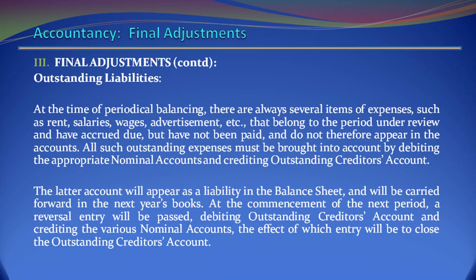Outstanding Liabilities. At the time of periodical balancing, there are always several items of expenses, such as rent, salaries, wages, advertisement, etc., that belong to the period under review and have accrued due but have not been paid, and do not therefore appear in the accounts. All such outstanding expenses must be brought into account by debiting the appropriate nominal accounts and crediting the outstanding creditors account. This account will appear as a liability in the balance sheet and will be carried forward in the next year's books. At the commencement of the next year, a reversal entry will be passed debiting outstanding creditors account and crediting the various nominal accounts, the effect of which entry will be to close the outstanding creditors account.